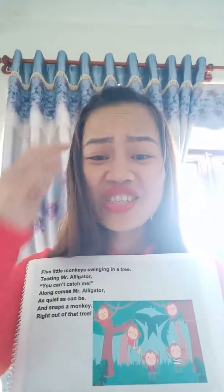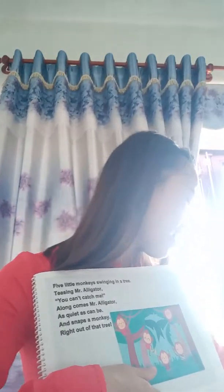Today we will learn about the song 'A is for Alligator.' Can you see it now? We have five little monkeys. Can you tell me how many monkeys do we have? Can you count? One, two, three, four, five — five monkeys! Now let's get started with the song.